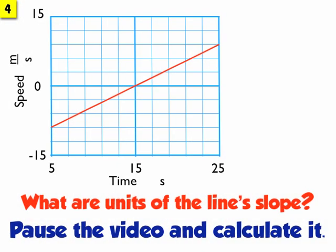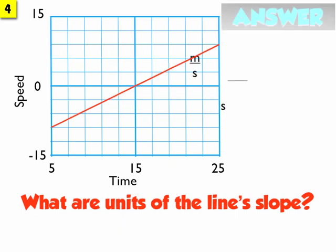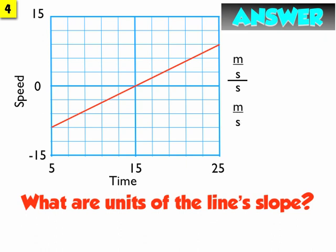Now a little bit more difficult problem. What are the units of the line's slope? You should have figured out the units, or at least thought about it. It becomes meters per second over seconds — units of the rise are a fraction, meters per second, divided by seconds. Dividing by a number is the same as multiplying by the inverse. So I can take meters per second and multiply that by 1 over seconds. All the top multiplies together: meters times 1, and seconds times seconds, to give me meters per second squared. So the units of the slope on this graph are meters per second squared.